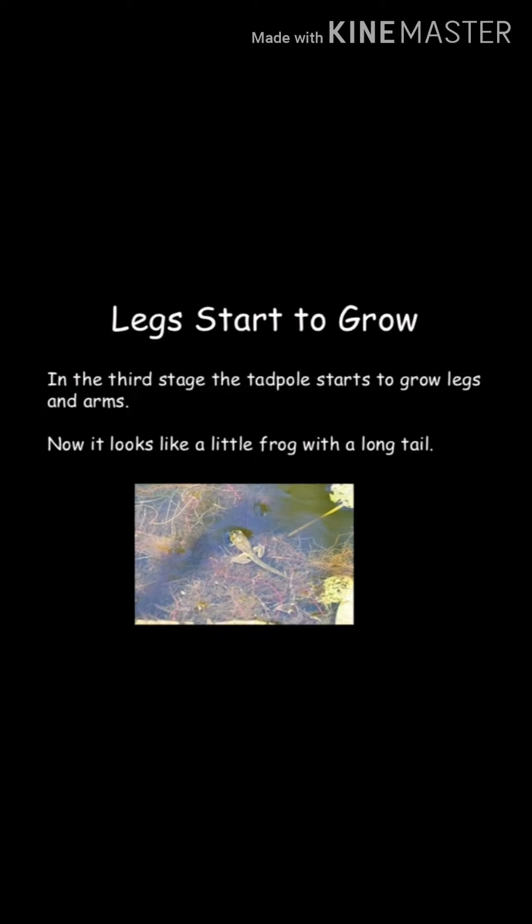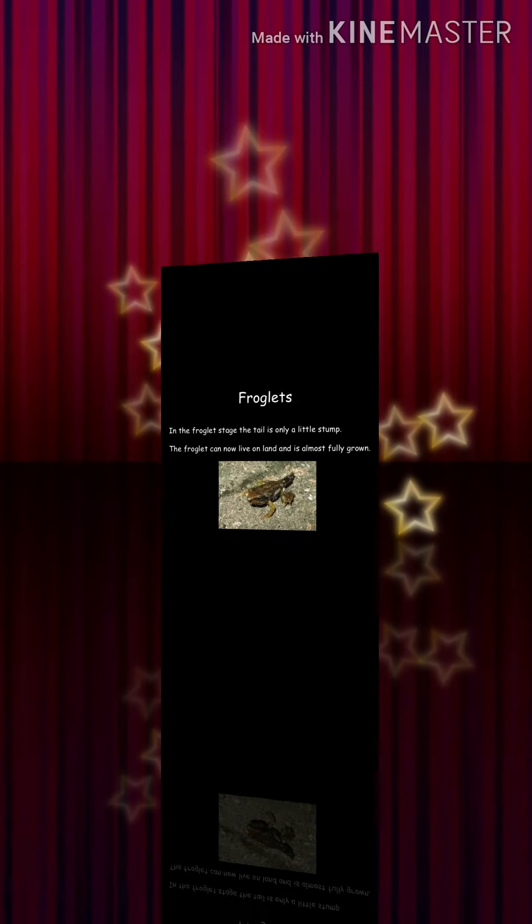Coming to the third stage: the tadpole starts to grow. In this stage, the tadpole sprouts back limbs or legs, and front limbs are also formed, which are also known as arms. But it still has a tail — it now looks like a little frog with a long tail.